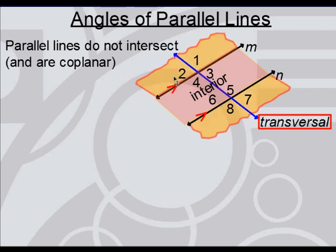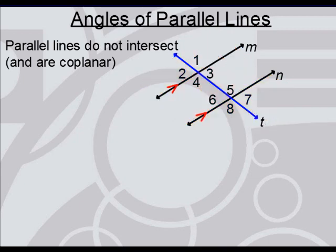So, angles one and two are exterior angles. Seven and eight are also exterior angles. The transversal also separates into two parts. You have a part to the right and a part to the left. If you have angles that are one side and then the other, they're referred to as alternate angles.